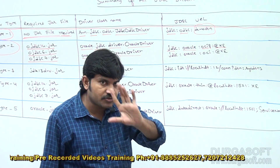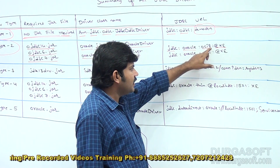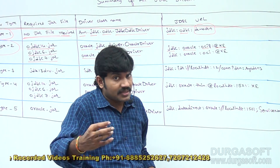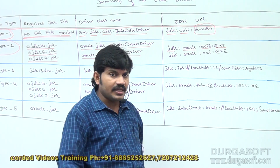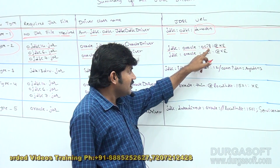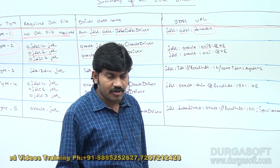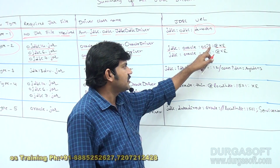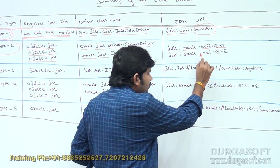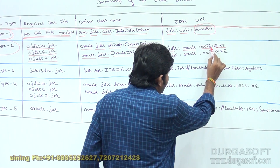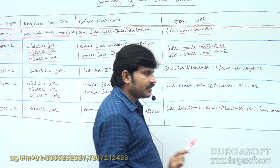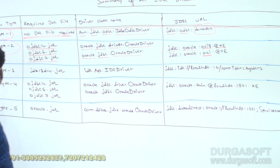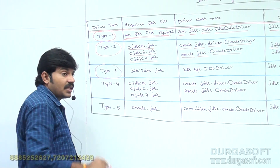The '8' in 'oci8' indicates Oracle 8. Until Oracle 8 this terminology is required, but for Oracle 10g, 11g, 12c the '8' is not required. So you can use either 'oci8' or just 'oci'.